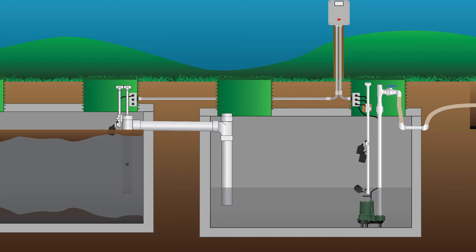A third and more interesting requirement in Idaho for effluent filters is that the filter must have a plug-off device. When you pull the filter cartridge, the housing must have a mechanism for closing off flow through the system. On any pump system where the effluent filter is required and installed in the septic tank, it has to have that plug-off device.